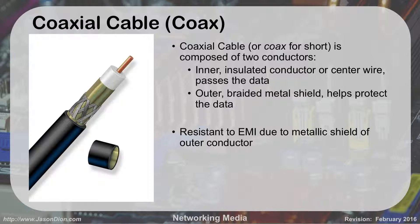The first one we're going to talk about is kind of older — it's called coaxial cable, also known as coax. You're probably familiar with this from your cable TV service. Coaxial cable is composed of two conductors: an inner conductor where the data is passed, called the center wire, insulated by white shielding, with a braided metal shield on the outside. The nice thing about coax is it's very resistant to EMI because of this metallic shielding.